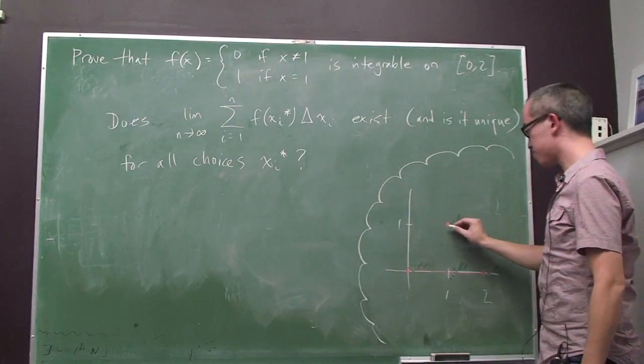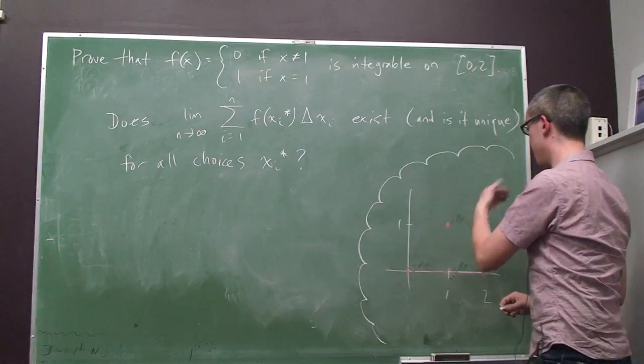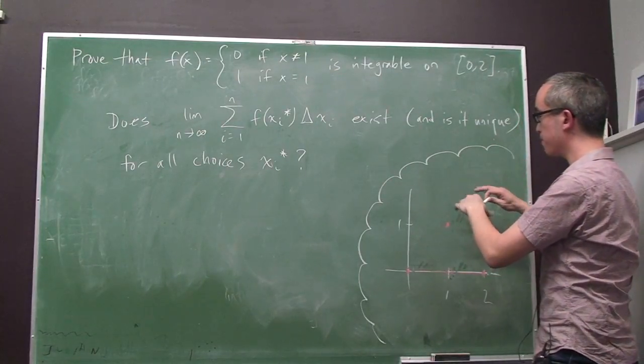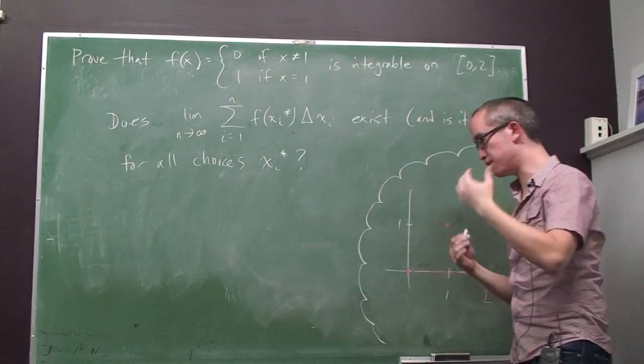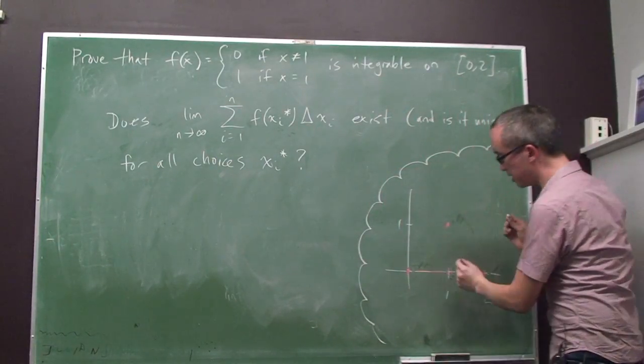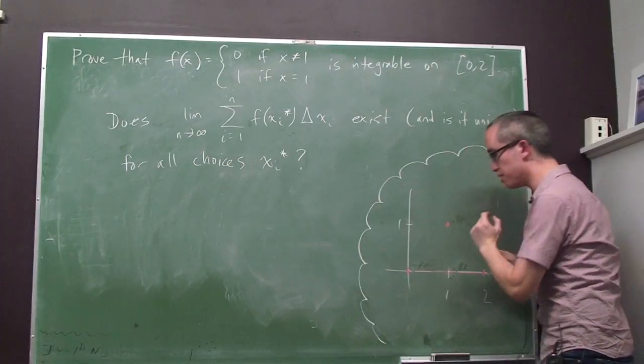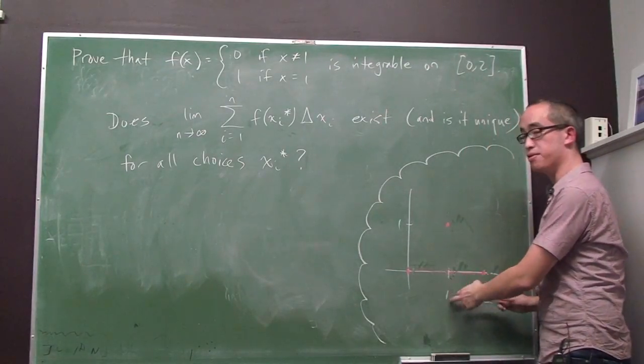The reason why is it just jumps up at this one point. And so, anything that makes the sum here deviate from 0 is going to take place in this very small neighborhood around 1.